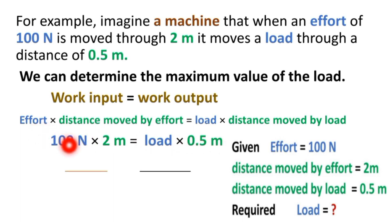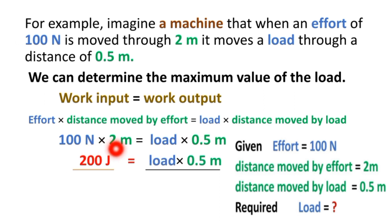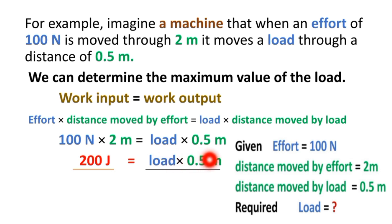Setting work input equal to work output: 100 N × 2 m = load × 0.5 m. Therefore load = 200 ÷ 0.5 = 400 Newtons. Wal kitathaha ba'a vaisu — the load is 400 Newtons, demonstrating that a small effort can produce a much larger load force.